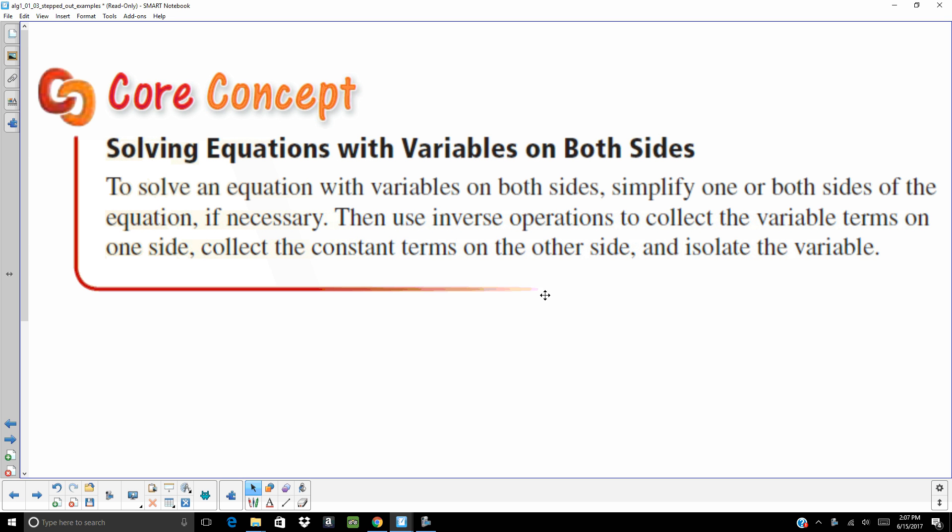To solve an equation with variables on both sides, you're going to simplify one or both sides of the equation. Then you're going to use those inverse operations to collect the variables on one side, collect the constants on the other side, and then get that variable by itself.